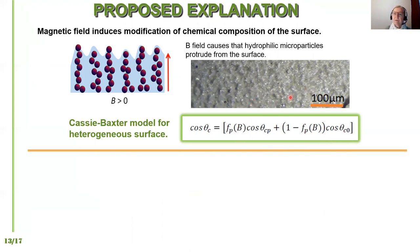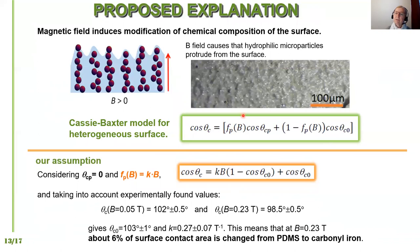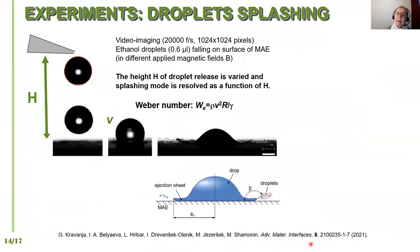We were puzzled for some time, but with precise inspection of the sample surface under the microscope we got an idea of the reason. When a magnetic field is applied, carbonyl iron particles actually protrude to the surface, causing chemical modification. Water, which at zero field is mainly in contact with PDMS, comes more and more into contact with carbonyl iron particles. Because we use uncoated particles and carbonyl iron is known to be very hydrophilic, the protrusion of particles causes the contact angle to decrease. In a field of 230 millitesla, about 6 percent of the surface contact area is modified from PDMS to carbonyl iron.